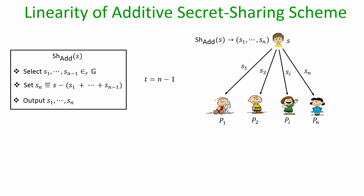Let us recall the additive secret sharing where all operations are performed over the group. To share a value S, the first n-1 shares are picked uniformly at random from the group, and the last share is set such that the summation of all n shares gives you the secret S. The degree of sharing is n-1, meaning only when the entire set of n parties come together do they constitute an authorized set. Even if one party is missing, a group of n-1 parties — even if computationally unbounded — learns absolutely nothing about the underlying secret.